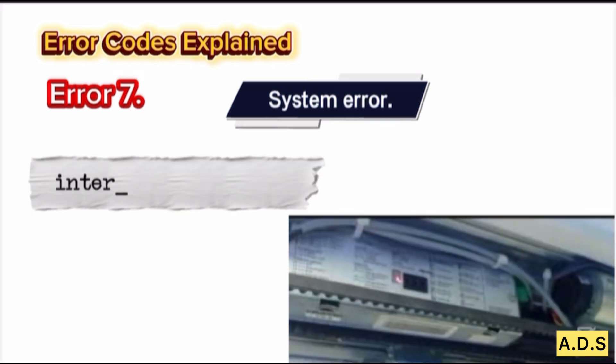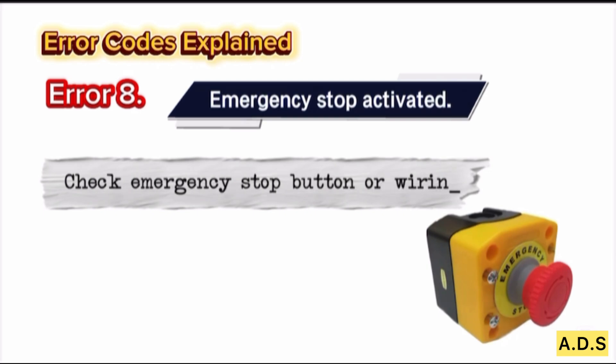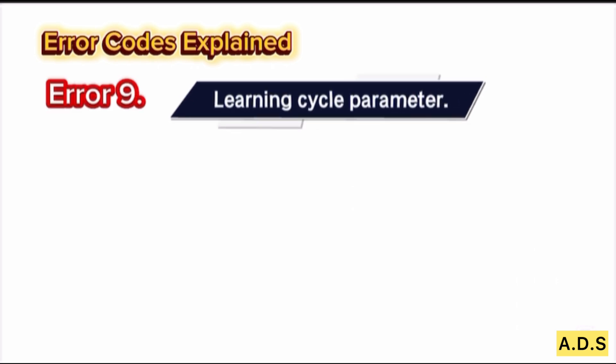Error 7: System error — internal control board issue. Error 8: Emergency stop activated — check the emergency stop button or wiring. Error 9: Learning cycle parameter error — a relearn cycle is needed.